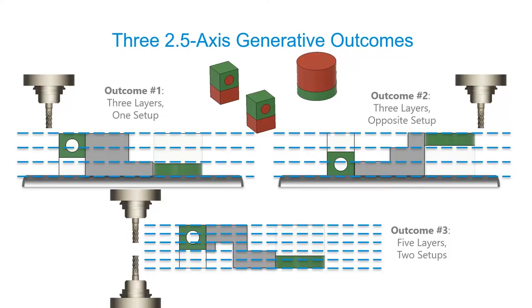You can see in outcome one, it's splitting that geometry into three layers to be machined as one setup. Outcome two is three layers, but it's machining from the opposite direction. And then outcome three is two setups with five layers. So these are all things to keep in mind when you're setting up a generative solve for these factors or if you're reviewing the outcomes that you would see.